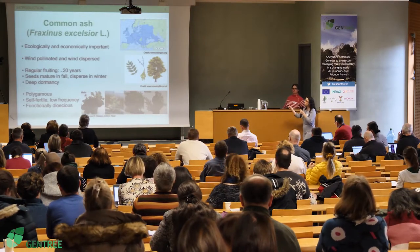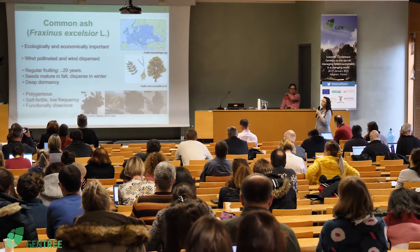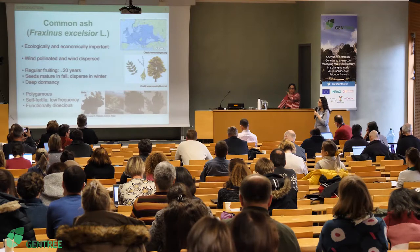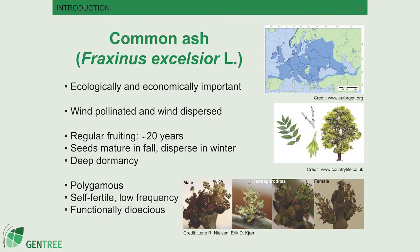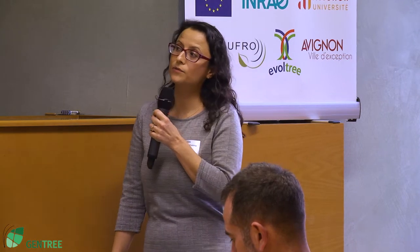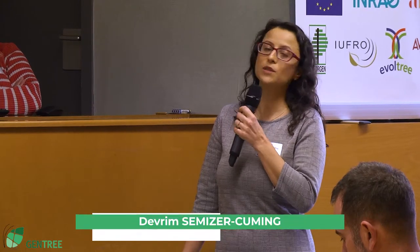Common ash is an ecologically and economically important tree species in Europe and it's widespread. For this study, importantly, it's wind-pollinated and wind-dispersed. Regular fruiting starts at around 20 years of age, with seeds maturing in fall and dispersing over winter — a process that takes several months. Some seeds can stay on the trees until the following summer.